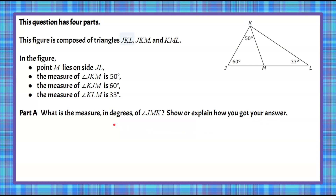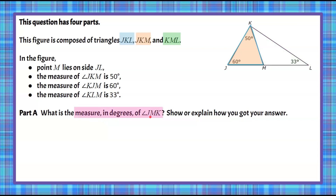Welcome back. So we are looking at these three triangles. We have triangle JKL, which is the entire big triangle. Then we have triangle JKM, which is the triangle on the left side of the big triangle. And our third is triangle KML, which is the right side of the triangle. All of these angle measures are labeled in the diagram. We're asked to find the measure of angle JMK — the middle letter M is the vertex — and we're looking to find what I've labeled X here, the third angle of this smaller triangle.